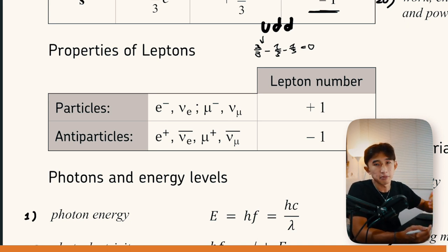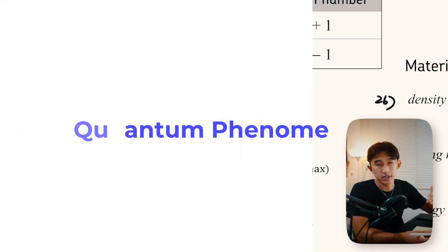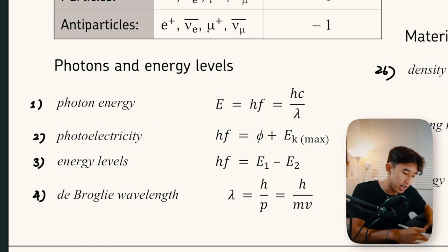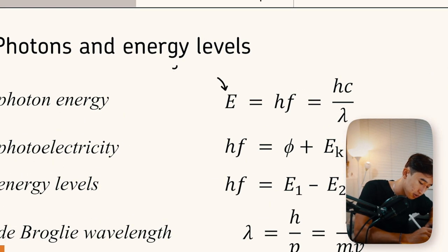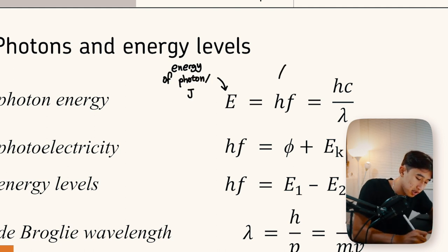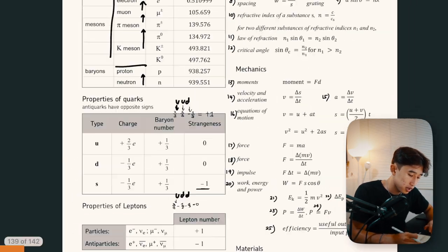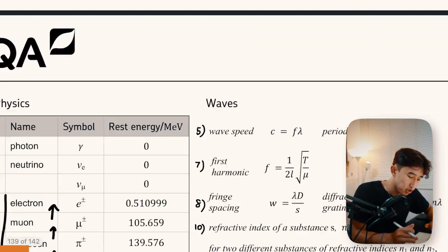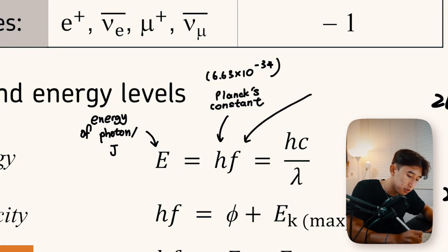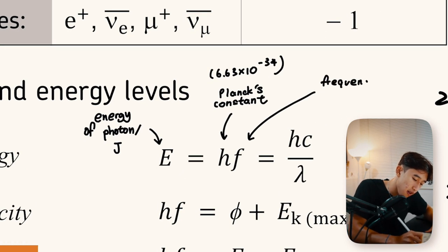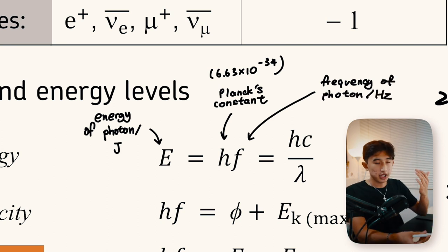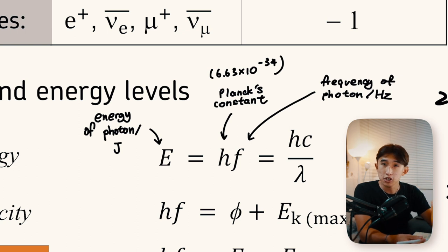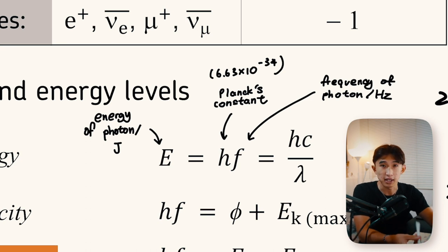Anti-particles have a negative lepton number — vice versa for particles. Now for quantum phenomena: photon energy is E = hf, where E is the energy of the photon in joules, h is Planck's constant (6.63 × 10⁻³⁴ J·s, given on page one of the data sheet), and f is the frequency in hertz. If given the frequency, you can calculate photon energy by multiplying by Planck's constant.